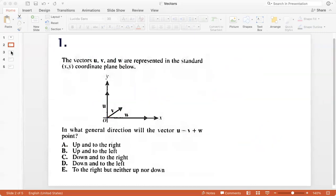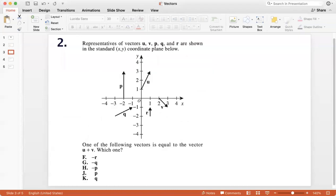Let's do another question. Question two. Representatives of vectors u, v, p, q and r are shown in the standard x, y coordinate plane below. One of the following vectors is equal to the vector u plus v. Which one? Okay, so we need to add u plus v.